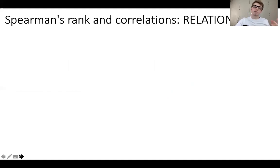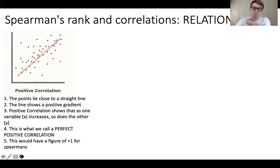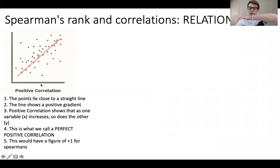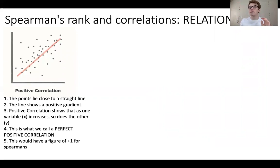So what do we mean by correlation? A positive correlation is when everything goes up — as one variable increases, so does the other. The points lie close to a straight line showing a positive gradient. This positive correlation shows that as variable X increases on the horizontal axis, so does the variable on the vertical Y-axis. This is what we'd call a perfect positive correlation — a strong, definitive, straight line — and this would have a figure of plus one for Spearman's.